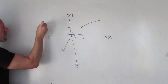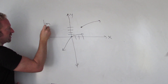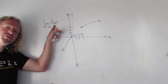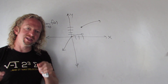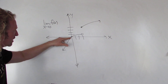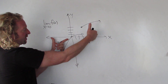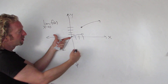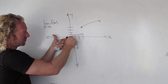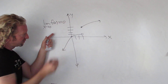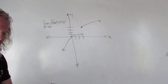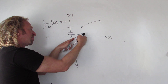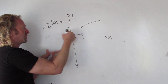First, let's find the limit as x approaches 0 of f of x. This is asking: what happens to the y value when x gets close to 0? We want to approach 0 from both directions — from the left and from the right. When x gets close to 0 from the left, the y value is 0. When x gets close to 0 from the right, the y value is 0. Therefore, the limit is 0.